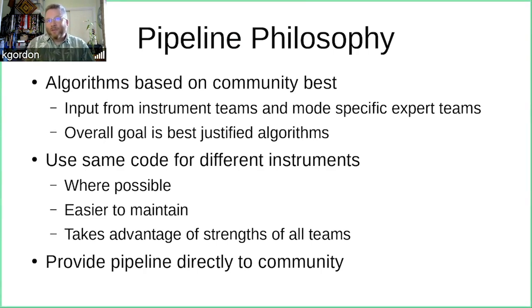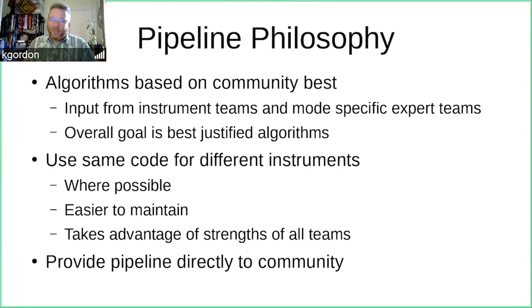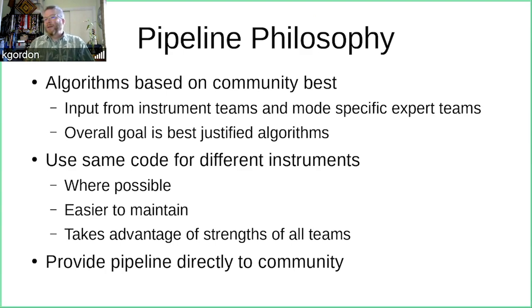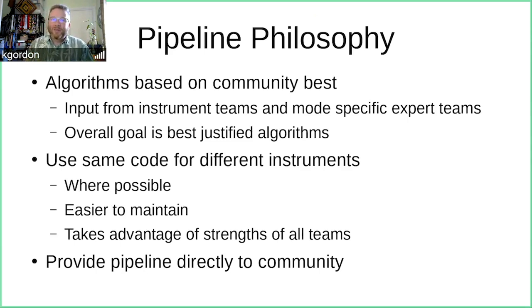We want to use the same code for different instruments where possible, which makes it much easier to maintain and takes advantage of the strengths of different teams. The pipeline is provided directly to the community — it's on GitHub, that's where it's developed. There is no private development that's then pushed publicly; you can see all the nuts and bolts.